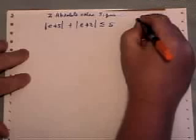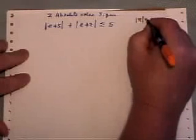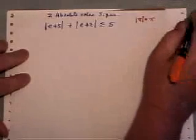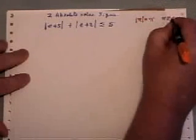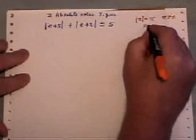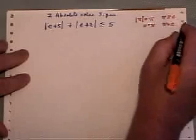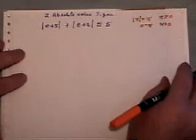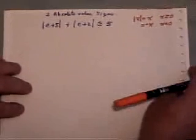Now remember our original definition of absolute value of x was that it equaled x if it was a positive number or zero. It equaled the opposite of x if it was a negative number. So that's what we're going to be looking at as working out with both of these.